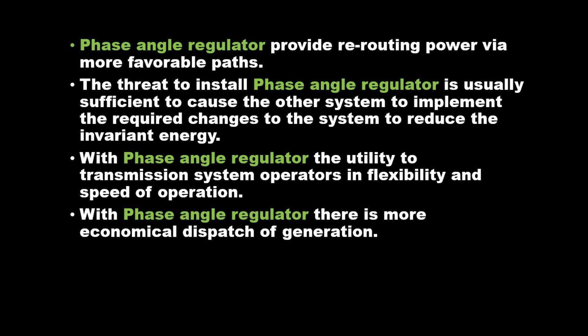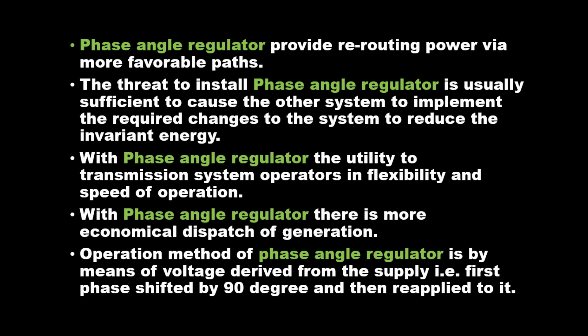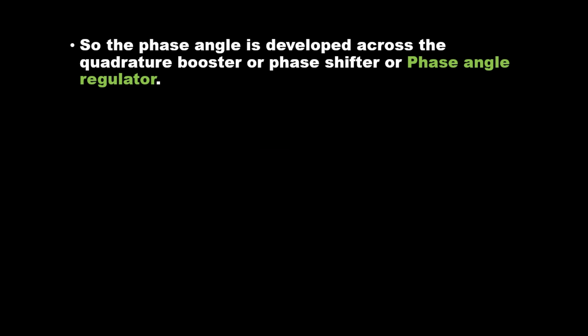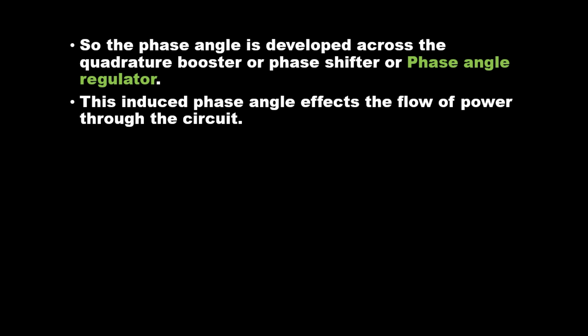The operation method of phase angle regulator is by means of voltage derived from the supply, first phase shifted by 90 degrees and then reapplied to it. So the phase angle is developed across the quadrature booster or phase shifter or phase angle regulator, and this induced phase angle affects the flow of power through the circuit.